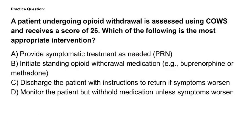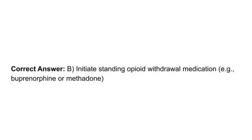Practice question: A patient undergoing opioid withdrawal is assessed using COWS and receives a score of 26. Which is the most appropriate intervention? A. Provide symptomatic treatment as needed (PRN). B. Initiate standing opioid withdrawal medication. C. Discharge with instructions to return if symptoms worsen. D. Monitor but withhold medication unless symptoms worsen. The correct answer is B — initiate standing opioid withdrawal medication.